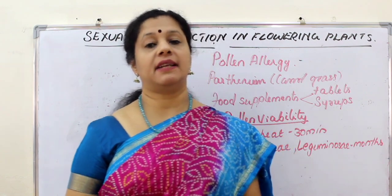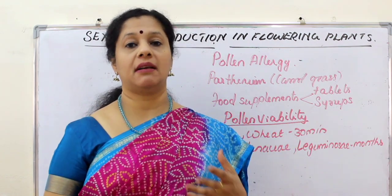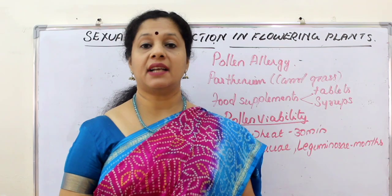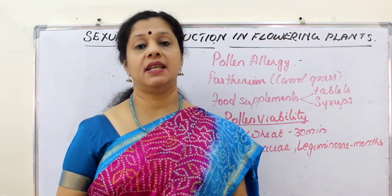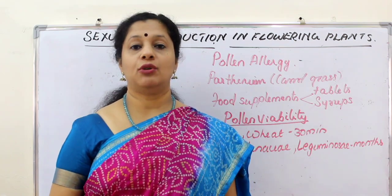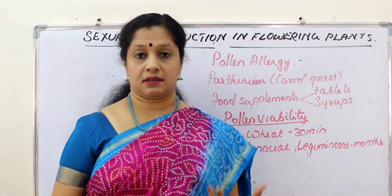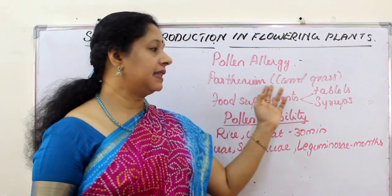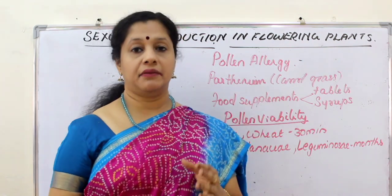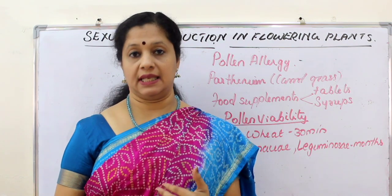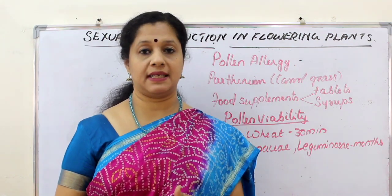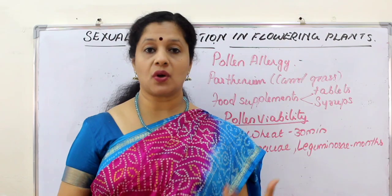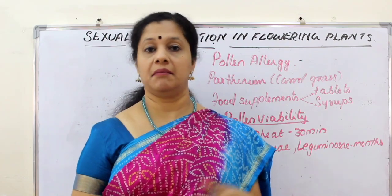A few more points to remember about pollen grains concern pollen allergy. Pollen grains can cause allergy in certain people, leading to bronchial afflictions or asthma. Parthenium is a weed brought to India through imported wheat varieties and is always called carrot grass. It is known to cause allergy in many people.